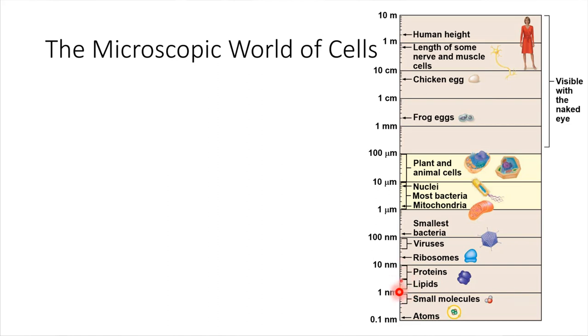If we keep going up on this scale, eventually we'll get to viruses, and then we get the smallest bacteria. These are the smallest cells that exist. If we keep going up in the size scale, eventually we come to plant and animal cells, and then things like frog eggs, chicken eggs—those are technically one cell.